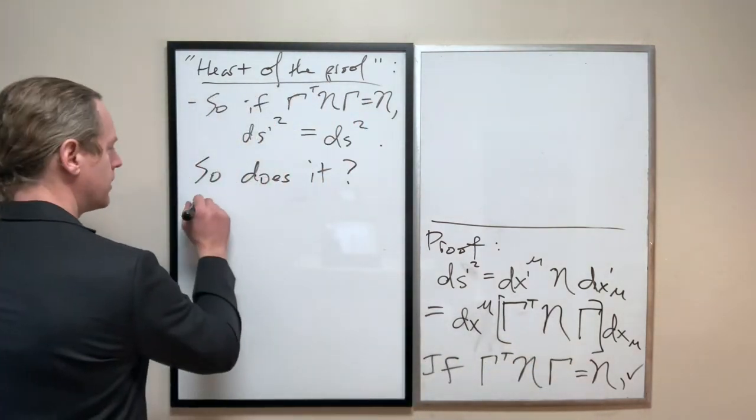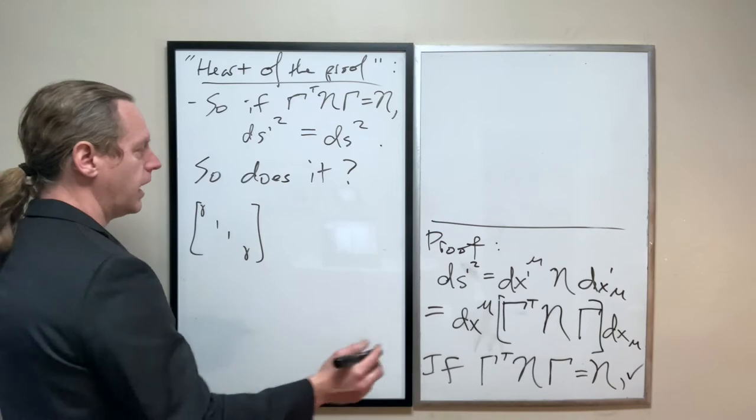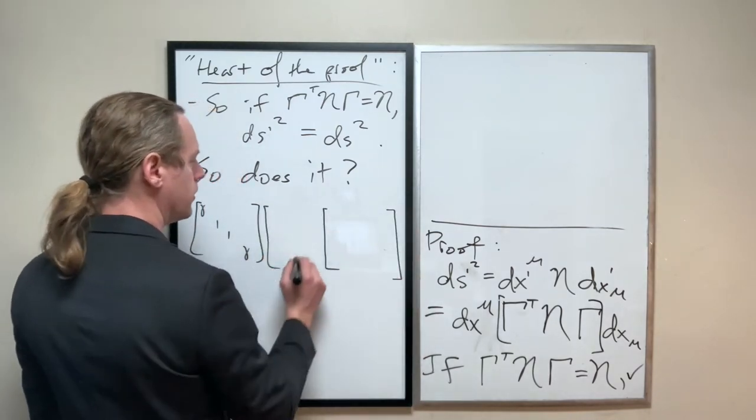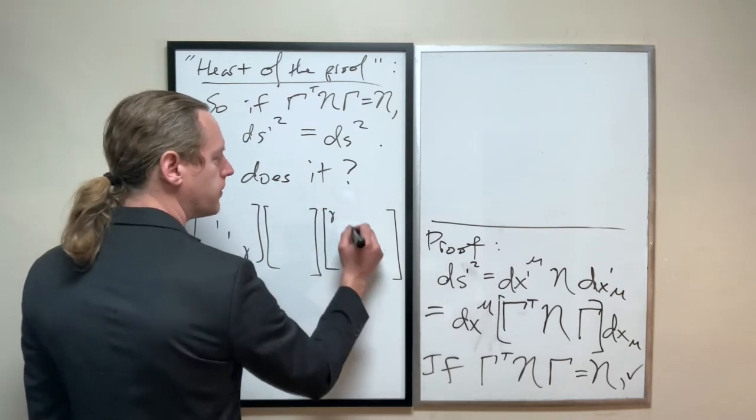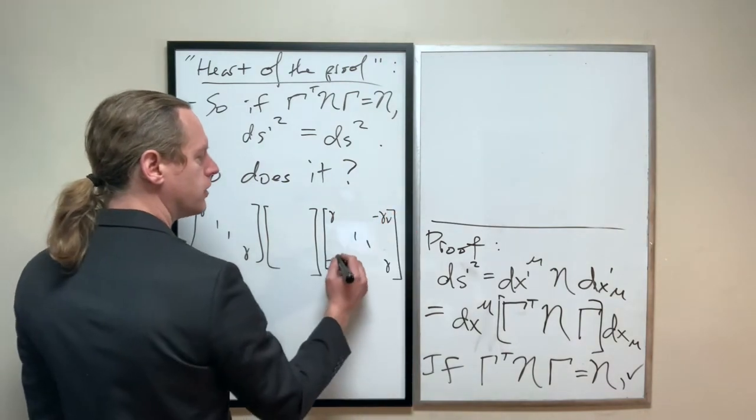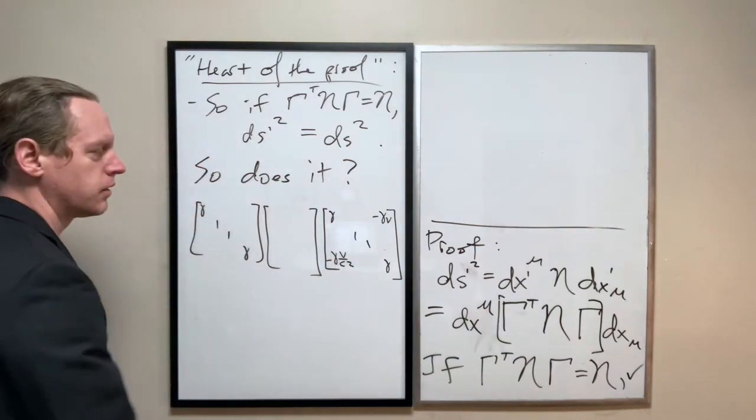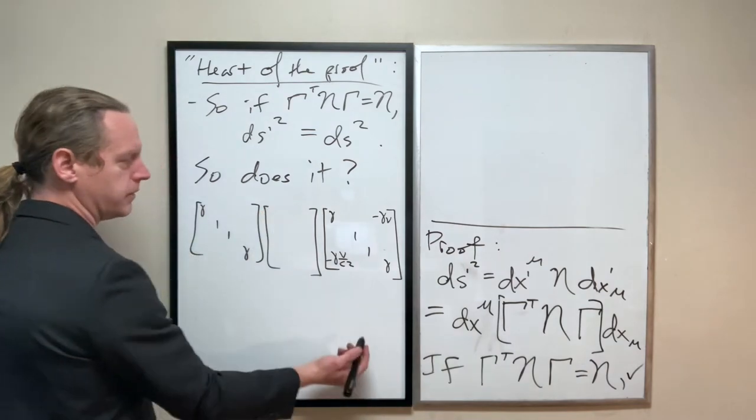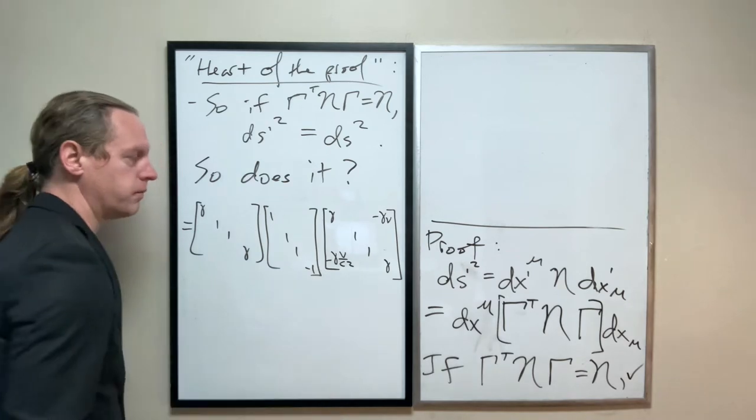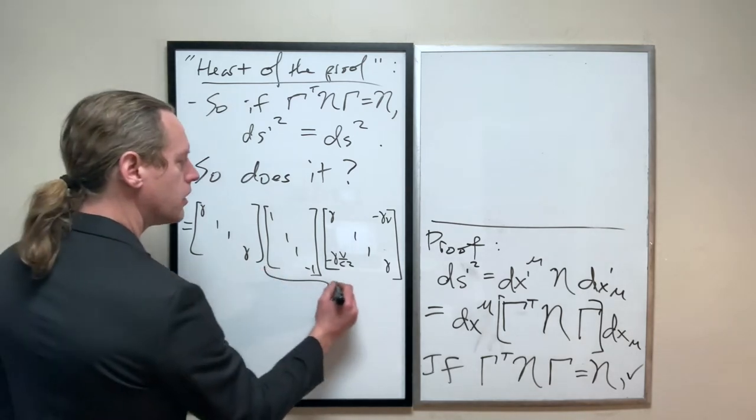I'm going to take the transpose of this, which, as you recall, gamma 1 1 gamma. And actually, I will put the normal non-transposed one there. Here's going to be our other 4x4, gamma 1 1 gamma. This was minus gamma v. This was minus gamma v over c squared. And the Minkowski matrix is 1, 1, 1, minus 1.